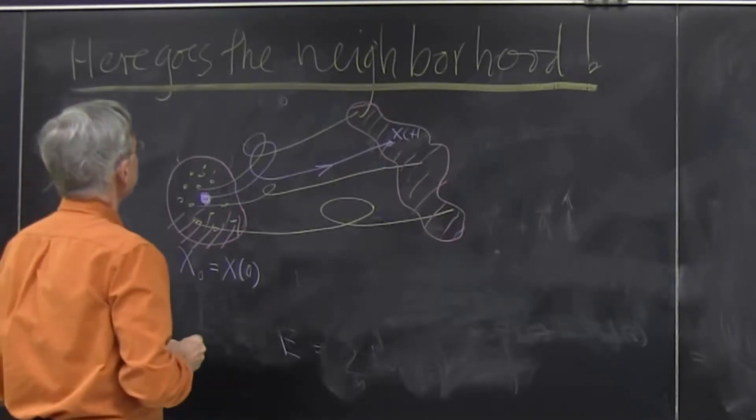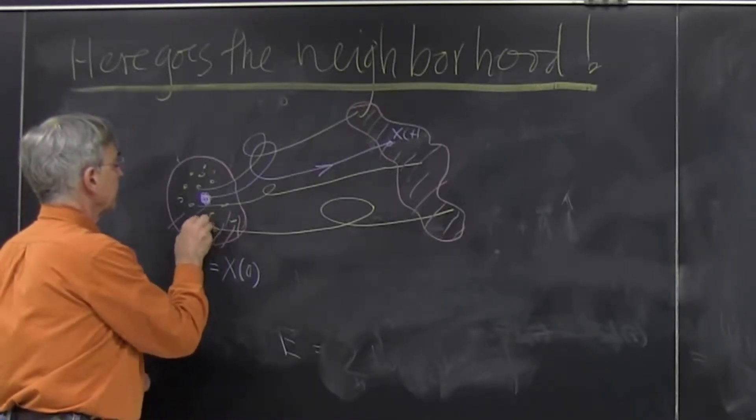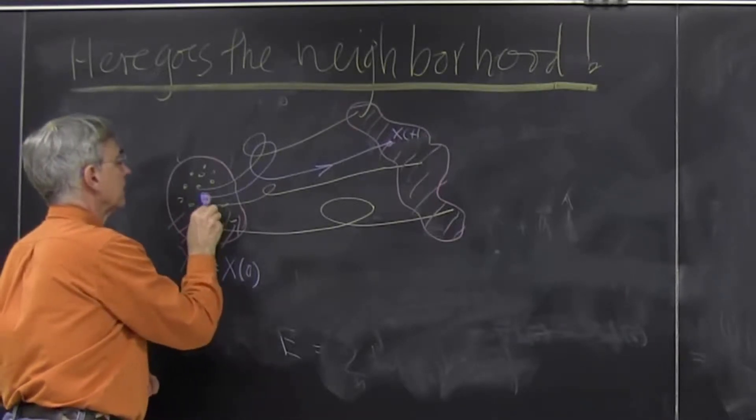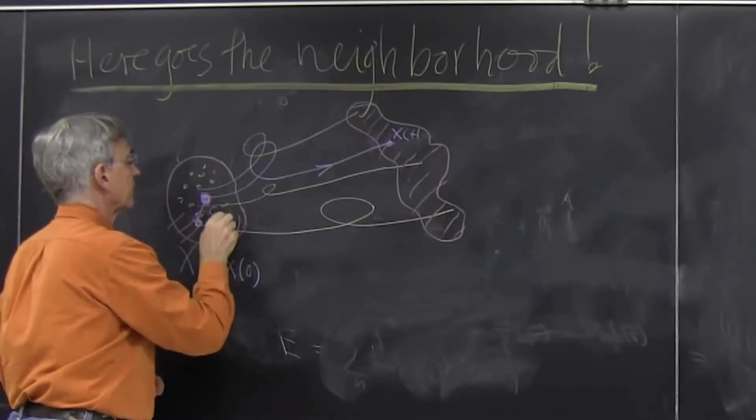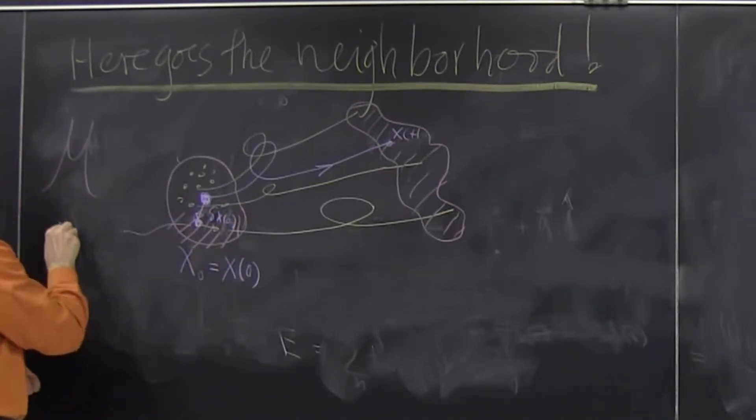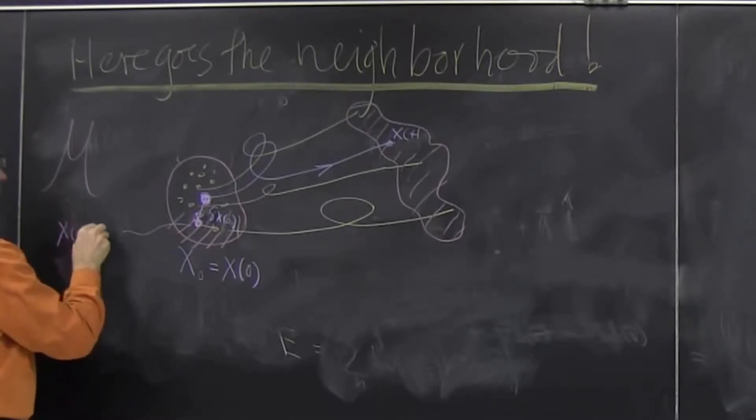To describe what happens in a neighborhood, you can take another point which is delta x at time 0 away. Here is a neighbor, any generic neighbor, x of 0 plus delta x of 0.